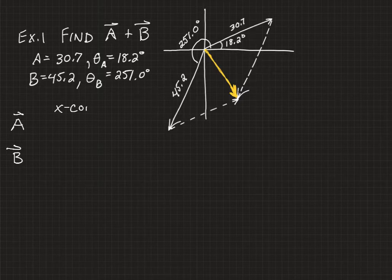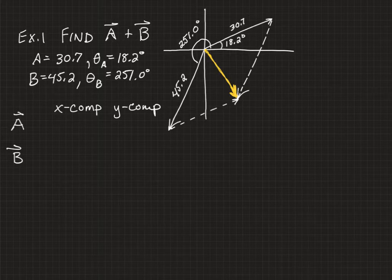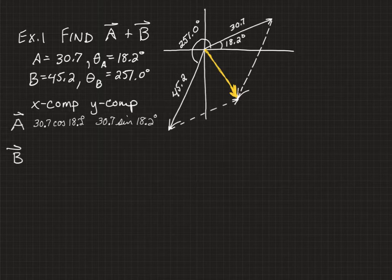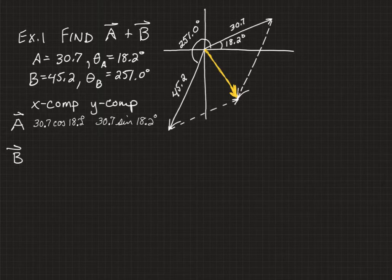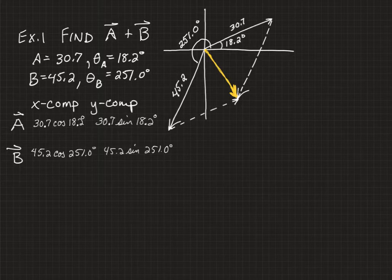So we make our chart full of our x components and y components for each vector. Neither of the vectors that we are adding is on one of the axes, so this is not going to be a simple problem. But just apply the steps, and it will fall into place. The x component of vector A will be the magnitude of A, 30.7, times the cosine of the standard angle of A, which is 18.2 degrees. Likewise, the y component will work out to be 30.7 times the sine of 18.2 degrees. And for B, we find the components of vector B in the same way. Magnitude times the cosine of the standard angle and magnitude times the sine of the standard angle.